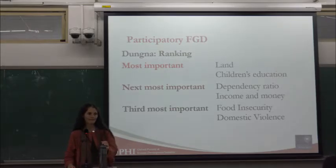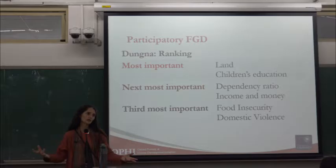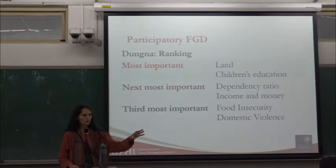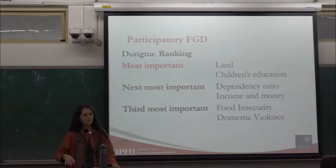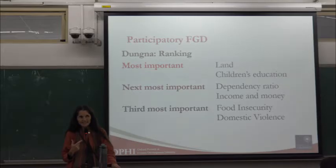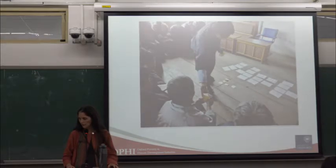Participatory work can range from focus groups of 8–12 people to whole rural communities of 35–40 as in this case. We tried to ensure that older men, older women, younger men, younger women, people from the margins, and well-off people all had a voice, with local leaders facilitating. In this community there was little social strife between poor and non-poor, so they were cohesive. But if there is tension, you want separate groups. The different dimensions and rankings were captured on sheets of paper.